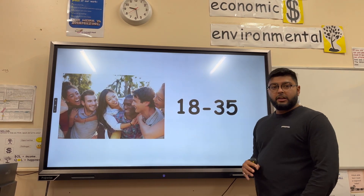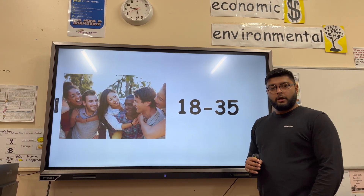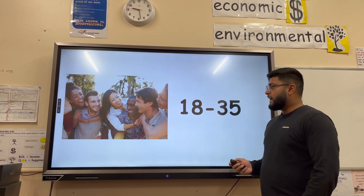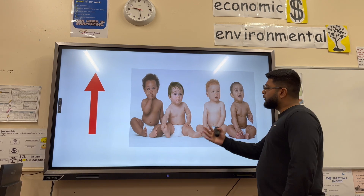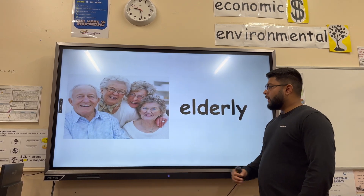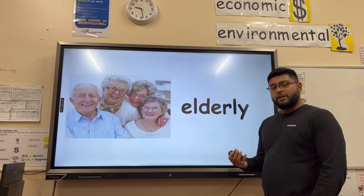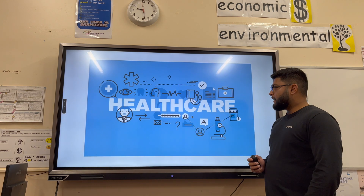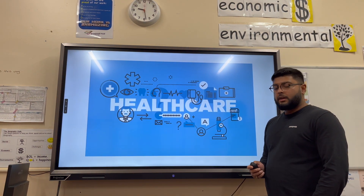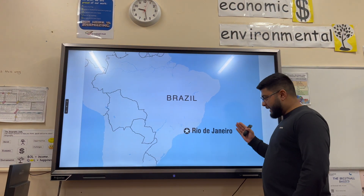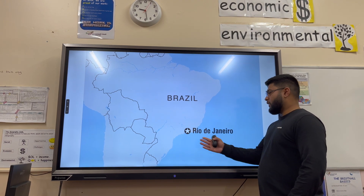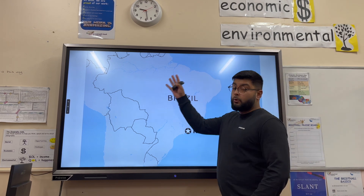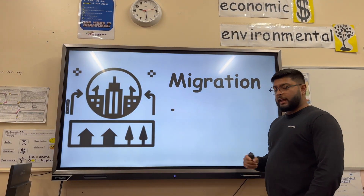Natural increase generally occurs when a large proportion of the population are 18 to 35 years of age, economically active, and rich enough to have children, leading to a high birth rate. In cities, there is generally a smaller elderly population, leading to fairly low death rates. Healthcare is also generally better in cities — a good example being Rio de Janeiro, which has better healthcare than the northern Amazon states in rural areas.